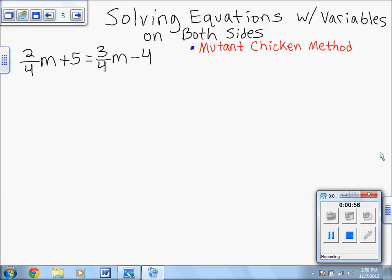Our variable is m. So the first thing we're going to do is we're going to combine m. So to help you remember, the mutant chicken method priority always tells us this: Move your variables to one side first. Now, if you do that, you should always move the smaller one towards the bigger one.